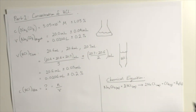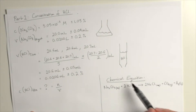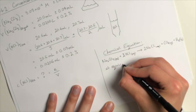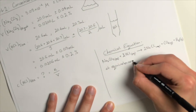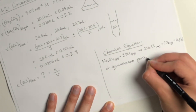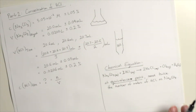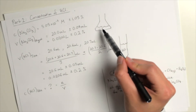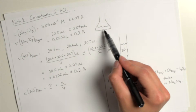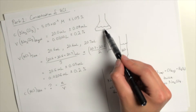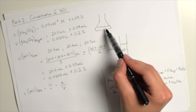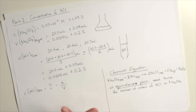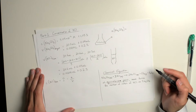Looking at the chemical equation, we find that for every one unit of sodium carbonate, we need two lots of hydrochloric acid to actually neutralize it — to reach our equivalence point. That means if I can calculate the moles of sodium carbonate in the aliquot flask, then the number of moles of HCl that reacted to completely neutralize it would be double that value.